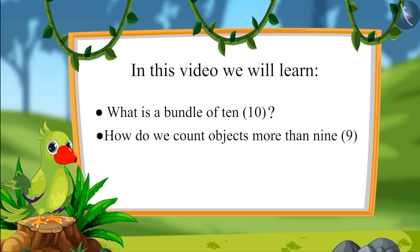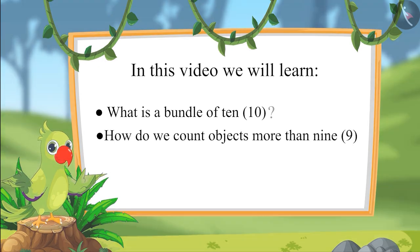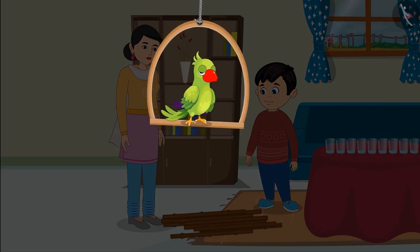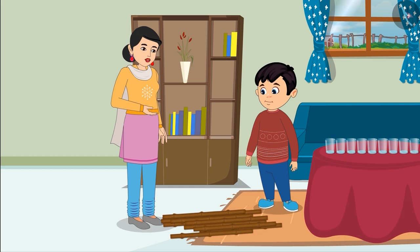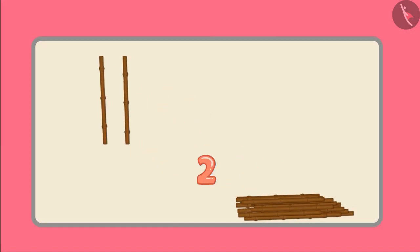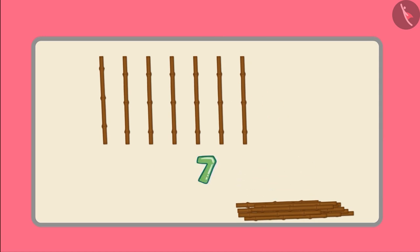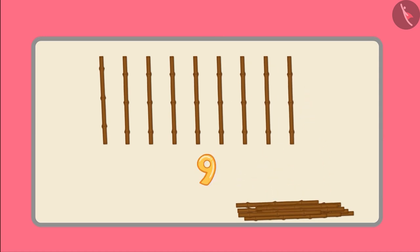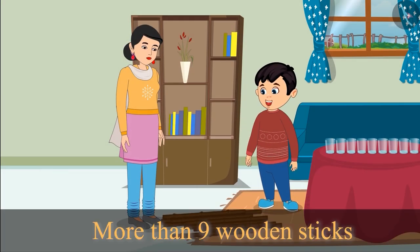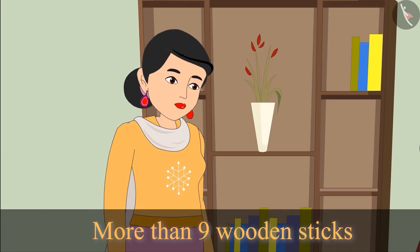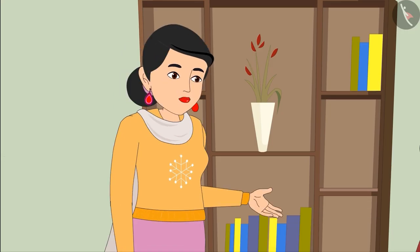What is a bundle of 10, and how do we count objects more than nine? Choto's mother needs some wooden sticks for a bonfire in the evening. Choto gets some wooden sticks from the forest. Choto counts: one, two, three, four, five, six, seven, eight, nine — and he doesn't know how to count ahead. These are more than nine wooden sticks.